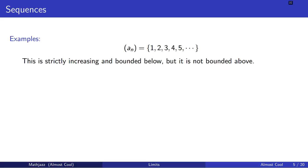Here are some examples of sequences where we'll discuss which properties each has. Sequence a_n is 1, 2, 3, 4, 5, and so on. This is a strictly increasing sequence — every element is strictly greater than the element before it. This sequence is bounded below but not bounded above. For example, 1 is less than or equal to every element, but there is no number greater than every element in this sequence.